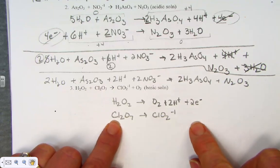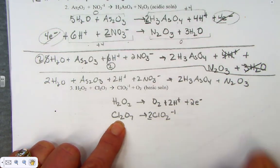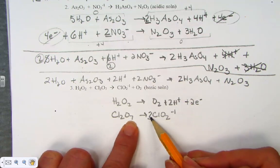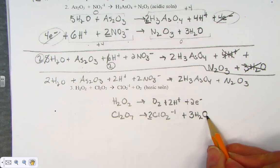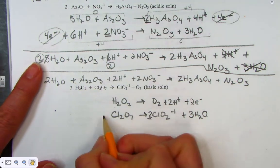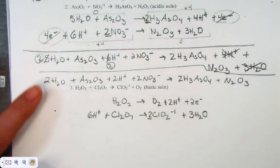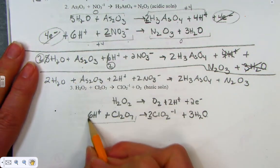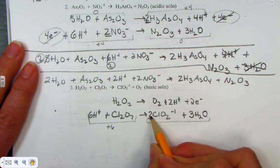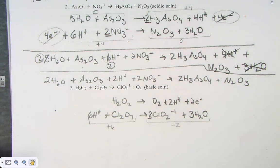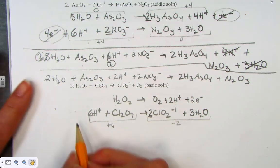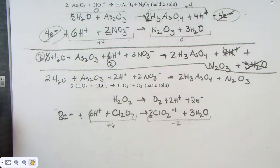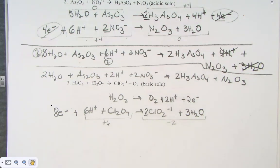For dichlorine heptoxide: start by doubling the product to get the chlorines to balance. Now for oxygens — 7 on the left, 2×2 = 4 on the right, so I need 3 more waters. 3 plus 4 is 7 — that matches. Let's count H's: 3×2 = 6. For electrical balance: the left side is plus 6, the right is minus 2. On the number line that's 8 units apart, so I add 8 electrons to the more positive side to bring both down to minus 2.